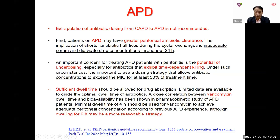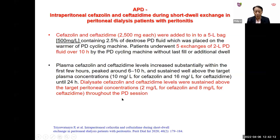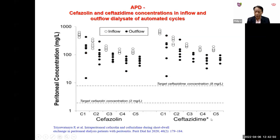A Thai study in PDI 2020 investigated cephalothin and cefazolin at 2500 mg added to five-litre bags (500 mg/L) across five exchanges over a 10-hour APD cycle. The target peritoneal concentrations were 2 mg/L for cephalothin and 8 mg/L for cefazolin. Results showed that outflow concentrations were maintained above both target concentrations throughout the APD cycles, providing one practical approach for dosing these antibiotics in APD.